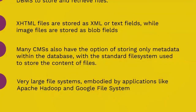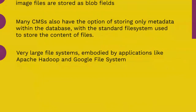Many web content management systems use a relational DBMS to store and retrieve files. For example, XHTML files are stored as XML or text fields, while image files are stored as BLOB fields. SQL SELECT statements retrieve the files and allow the use of sophisticated logic and richer information associations than usual file systems. Many CMSs also have the option of storing only metadata within the database, with the standard file system used to store the contents of the file. Very large systems embodying applications like Apache Hadoop and Google File System use some database file system concepts.